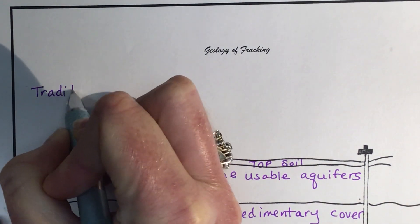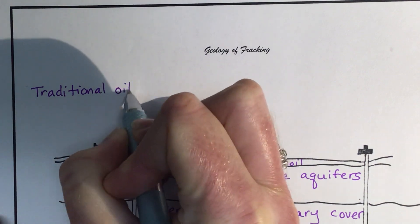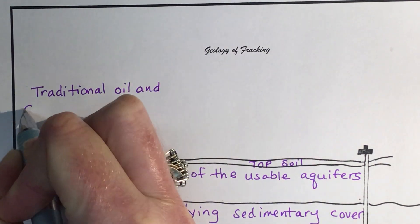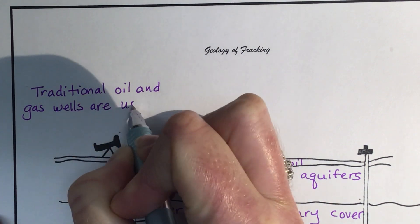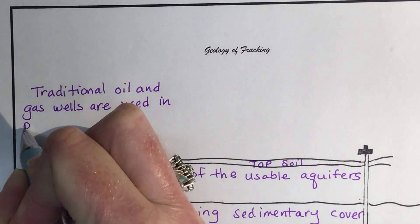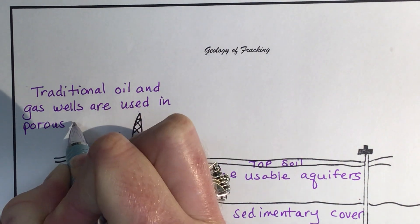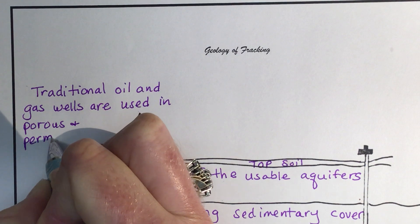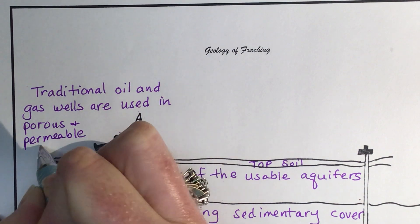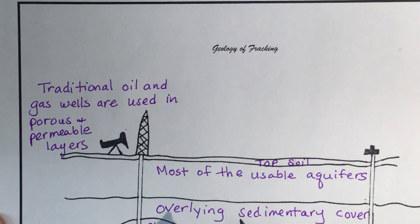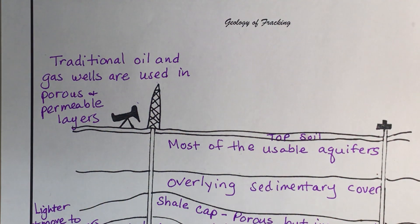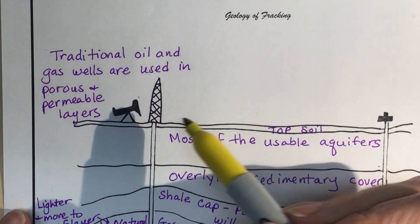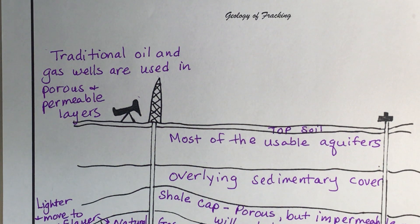Traditionally, these oil and gas wells are used in porous and permeable layers. We drill down to where we can extract the oil and gas.